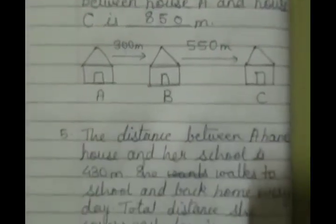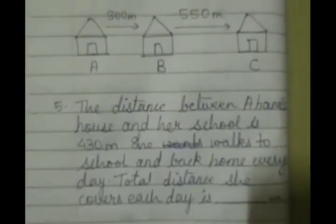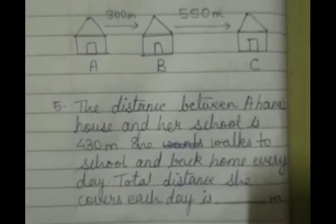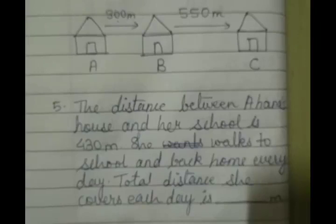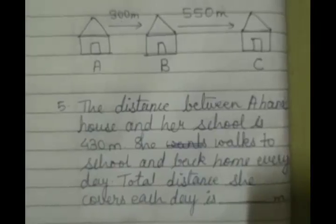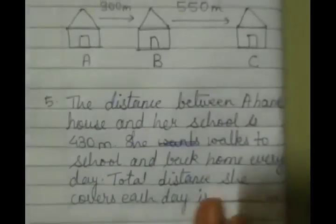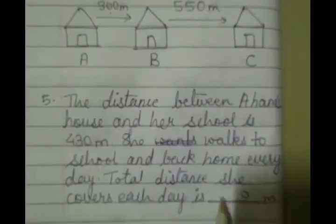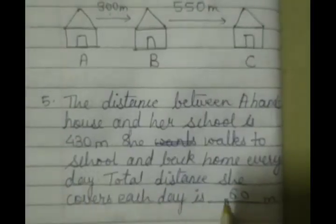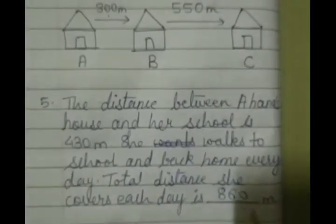Now next is the distance between Ahana's house and her school is 430 meter. She walks to school and back home every day. Total distance she covers each day is how much meter? As she is walking 430 meter towards the school and again 430 meter towards her house. So 430 plus 430. What will be the answer? 0 plus 0, 0, 3 plus 3, 6, 4 plus 4, 8. So it will be 860 meter.